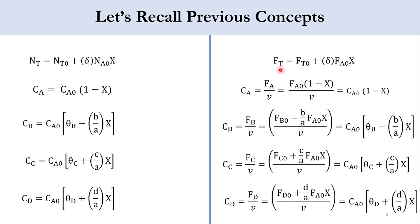For the flow systems, the relation is Ft = Ft0 plus sigma times FA0 times X, where N is replaced by F. Ca equals FA over v, where F is the molar flow rate and v is the volumetric flow rate, giving Ca0 times (1 minus X) for the liquid phase system. For CB it is Ca0 times (theta_B minus b/a times X), and for CC and CD similarly. We derived all these expressions in our previous two lectures on this building block.